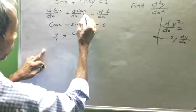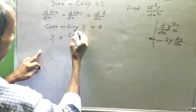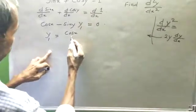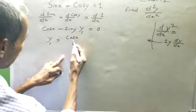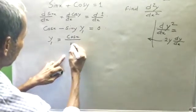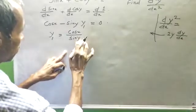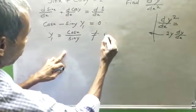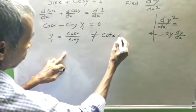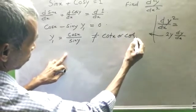d/dx of cos y over sin y. Then, cos x by sin y. This is x, this is y. Not equal to cos x or cos y.